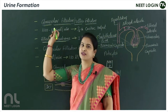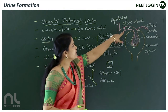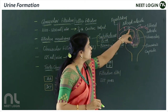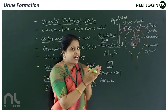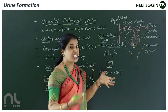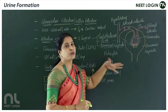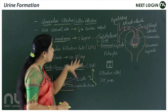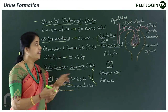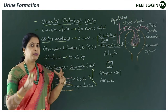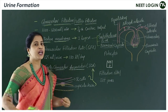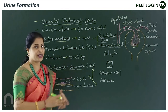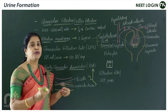Filtration happening through the glomerulus is called glomerular filtration. The afferent arteriole brings blood in, and the efferent arteriole carries blood away. The afferent arteriole has a wider lumen whereas the efferent arteriole has a narrow lumen — that is an important point to note. Around 1100 to 1200 ml of blood per minute is filtered by both kidneys combined.